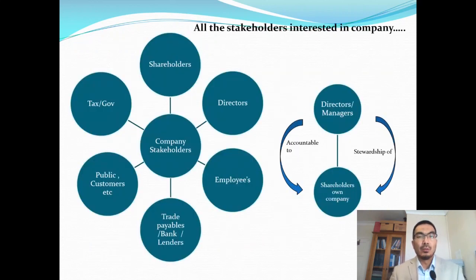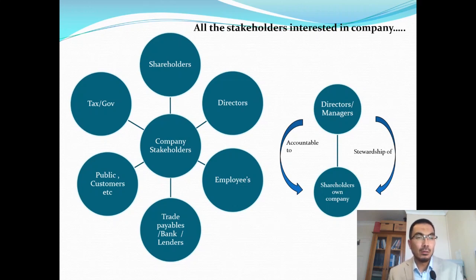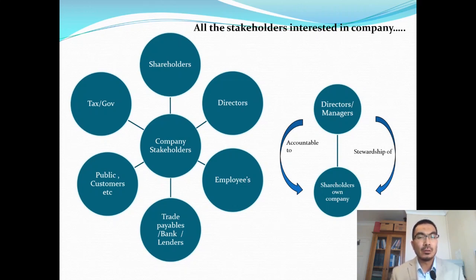Who are the users or stakeholders of the financial statements? The first group is shareholders — they own the company. In large companies, shareholders own the company but do not run it, so we have a separation of ownership and management. Directors run the company; shareholders own the company. According to agency theory, directors are accountable to the shareholders and are stewards — running the company on behalf of the shareholders.